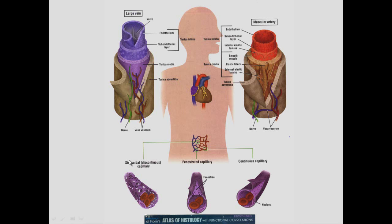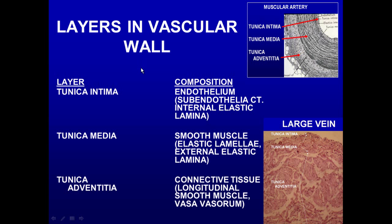Looking at the vascular wall, what touches blood is the tunica intima. The intima is composed of endothelial cells — remember, endothelium comes from mesoderm. In some vessels you have a sub-endothelial connective tissue, and in a muscular artery you have the internal elastic lamina — all of that is the intima.